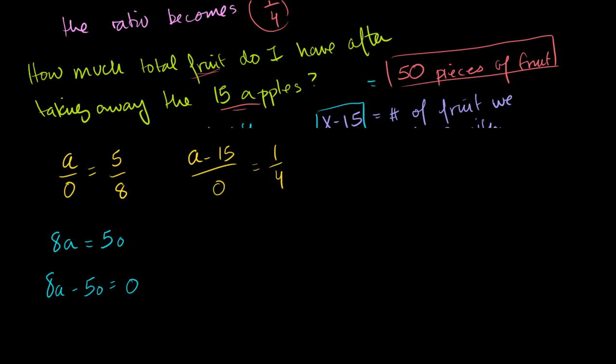Now what do we get on this right-hand side? If we cross multiply, we get 4A minus 60. I'm just multiplying 4 times A minus 15. That is equal to 1 times O. Or we could just write 1O. That's not a 10. That's 1O, or 1 orange.